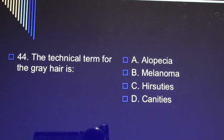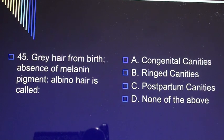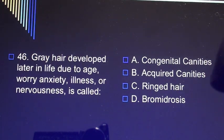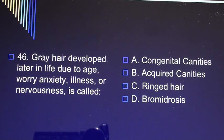Question 44: The technical term for gray hair is A) alopecia, B) melanoma, C) hirsutism, D) canities. Question 45: Gray hair from birth, absence of melanin pigment, albino hair, is called A) congenital canities. Question 46: Gray hair developed later in life due to age, worry, anxiety, illness, or nervousness is called A) congenital canities, B) acquired canities, C) ringed hair, D) bromidrosis.